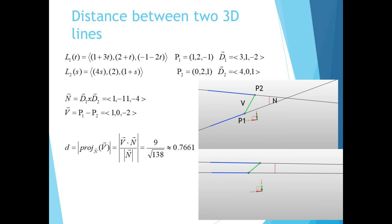Now choose a point on each line and create a vector v joining them. Viewing from a direction perpendicular to n, we can see that our distance can be found by projecting v onto n. We let v equal P1 minus P2, the vector joining the two points that define our lines, so v equals 1, 0, 2. The length of the projection of v onto n will just be v dot n over the magnitude of n. In this case, that equals 9 over the square root of 138, or about 0.7661.